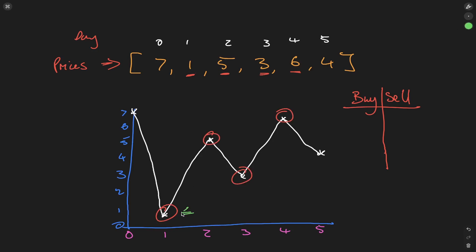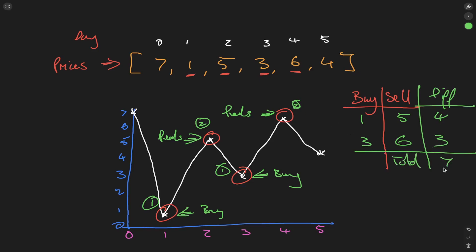If we think about it, we always buy at the troughs of these graphs and always sell at the peaks. First, we buy at a trough, then sell at its peak, then buy again at the trough and sell at the peak. The difference is 4, then 3, and the total is 7.